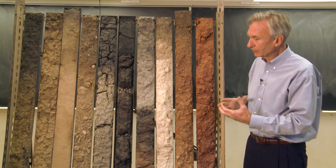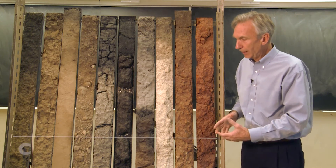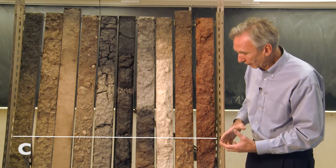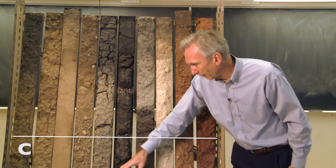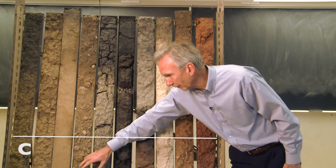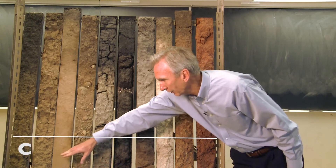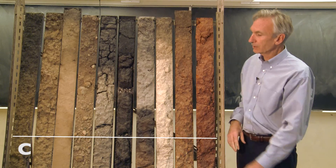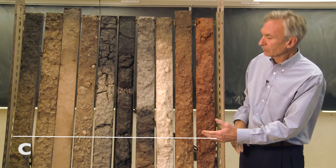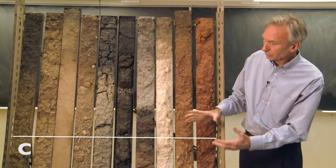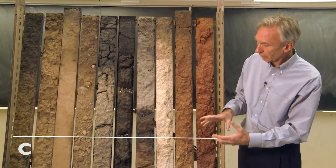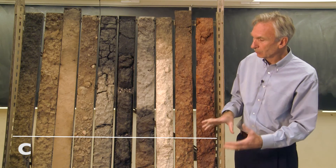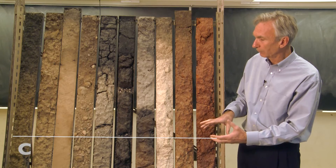The C horizon is the parent material — that's the material from which the soil formed. At the bottom of this profile here, and that profile, and the profile on the far left-hand side, what you're actually looking at is the parent material, the material from which the soil was formed.